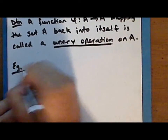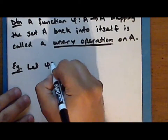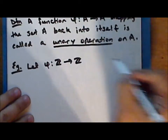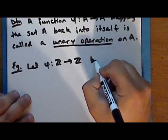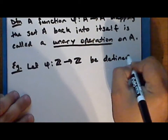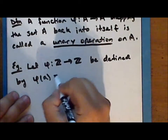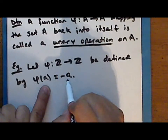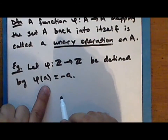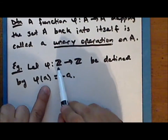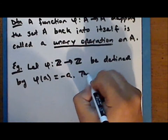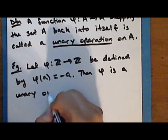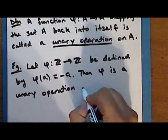Let the function phi be a map from the set of integers back into the set of integers, defined by phi of A equals the negative of A. For any integer, if we take its negative, we once again have an integer. So this function maps the set back into itself, and phi is a unary operation on the set of integers.